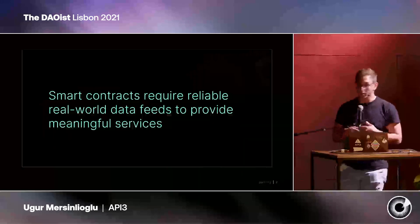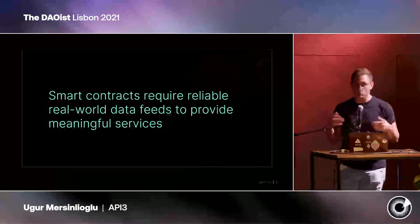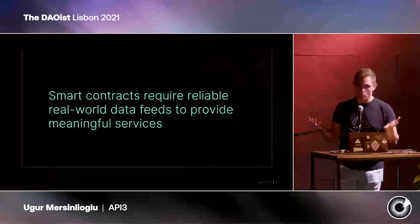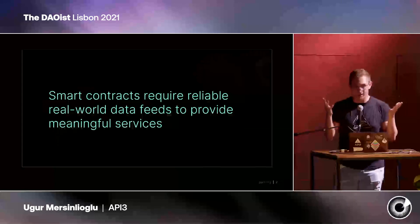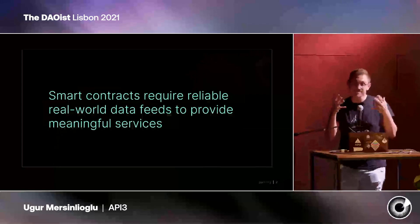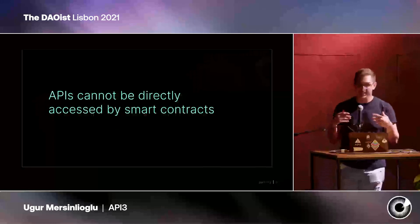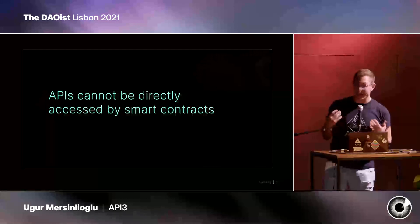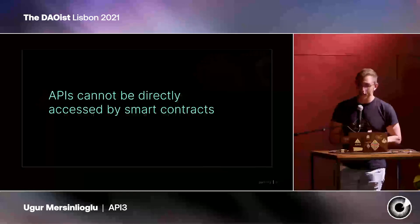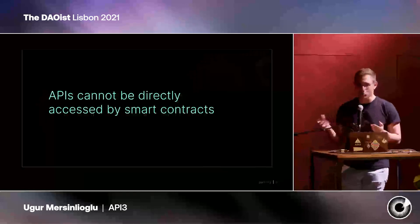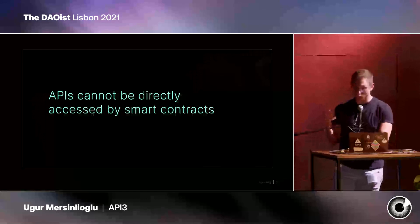Basically, smart contracts require reliable real-world data feeds to provide meaningful services. If you want a loan, for instance on Aave, you need price details. And that is natively not available on the blockchain, because APIs cannot be directly accessed by smart contracts. The solution to this is, quite frankly, to build the data that is needed into the respective blockchain.